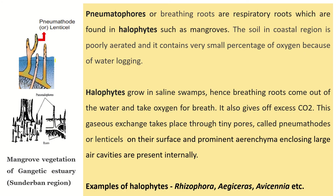Next, coming to pneumatophores. Pneumatophores are negatively geotropic — normally roots are positively geotropic, meaning they grow downward, but pneumatophores grow upward, popping out of the soil. They are negatively geotropic breathing roots or respiratory roots found in halophytes such as mangroves. The soil in the coastal region has very little air and is poorly aerated, so in order to get fresh oxygen, these negatively geotropic roots pop out of the substratum in search of fresh air.